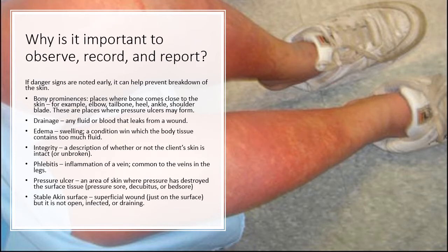Drainage is any fluid or blood that leaks from a wound. Edema is a swelling, or a condition in which the body tissue contains too much fluid. Integrity is a description of whether or not the client's skin is intact or unbroken. Phlebitis is an inflammation of a vein, common to the veins in the legs. A pressure ulcer is an area of skin where pressure has destroyed the surface tissue — sometimes called a pressure sore, decubitus, or bed sore. Stable skin surface refers to skin that may have a superficial wound just on the surface, but it is not open, infected, or draining — also called good skin integrity.